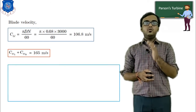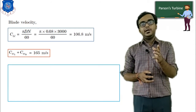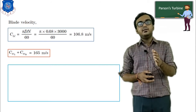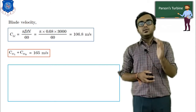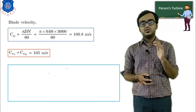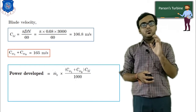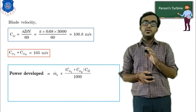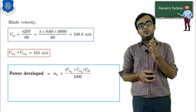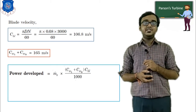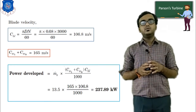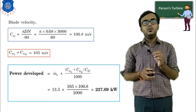Now we find the power. Using the formula: Power = mass flow rate × blade velocity × (Cw1 + Cwo) / 1000. Putting in all the values — mass flow rate 13.5 kg/s, blade velocity 106.8 m/s, and (Cw1 + Cwo) = 165 m/s — the power developed is equal to 237.89 kW.